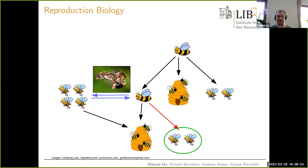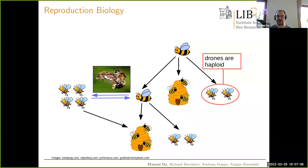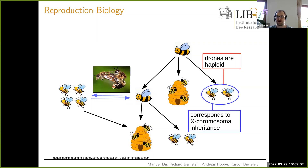The queen also produces drones, but drones develop from unfertilized eggs, so they do not have a father. This is the first challenge for quantitative genetics: drones are haploid — they only have one set of chromosomes from the queen — whereas queens and workers are diploid. Modeling this haplodiploid genetics is not so difficult because there is a correspondence in mammals, namely the inheritance of the X chromosome, where males also have only one X chromosome. The quantitative genetics of X-chromosomal inheritance has been well studied for many decades.